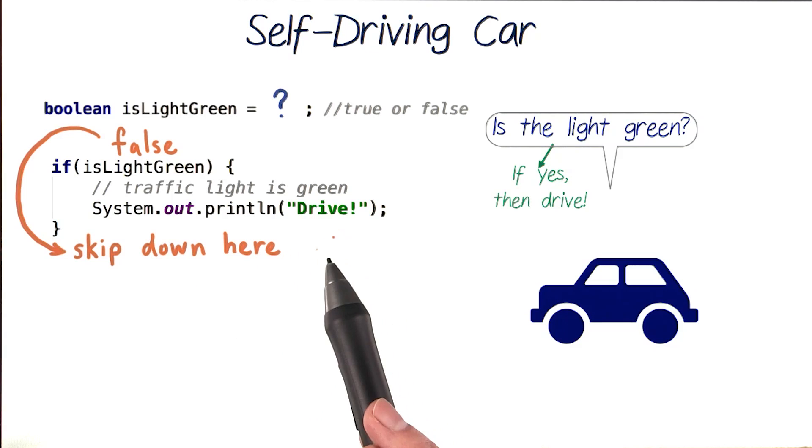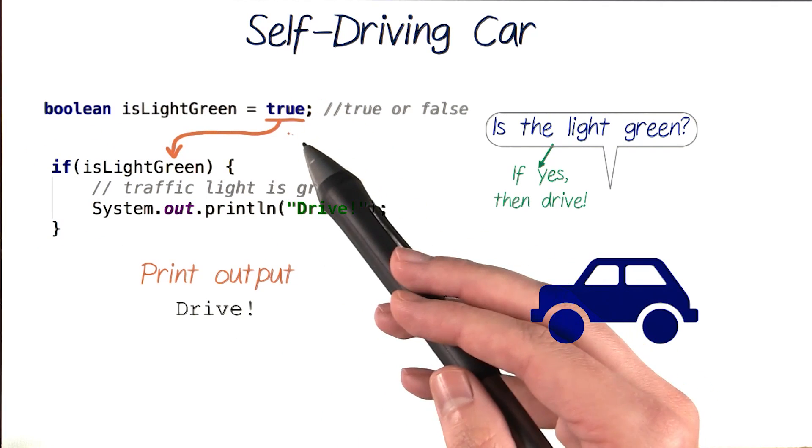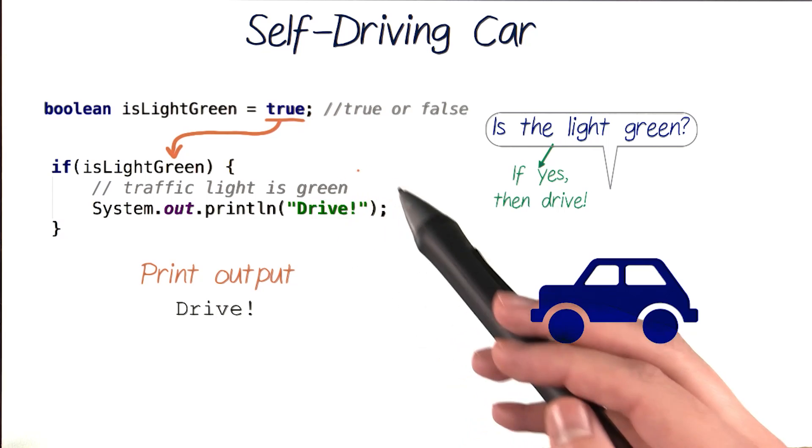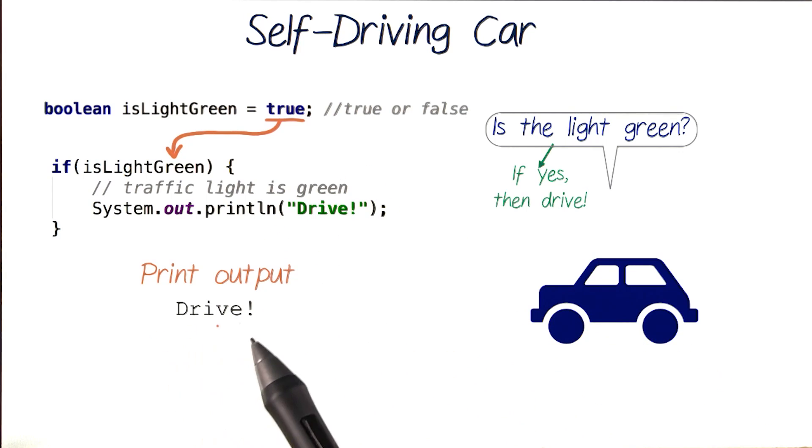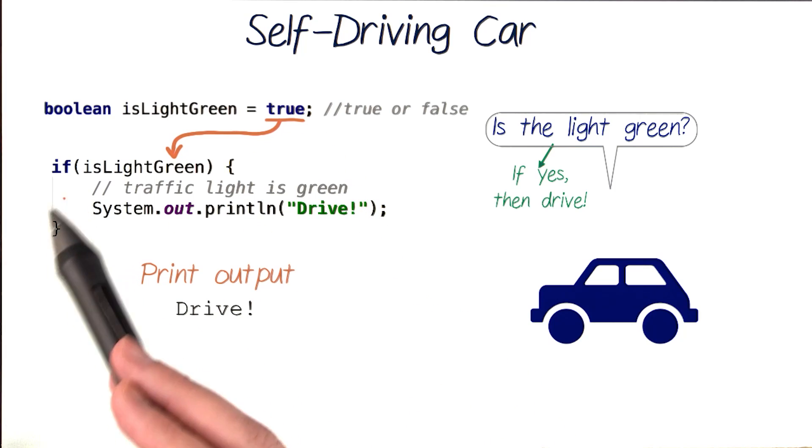So this is our finished if statement. If isLightGreen is true and we run this code, we'll enter our if statement block and the print output will be drive. If our test condition isLightGreen was false, we wouldn't print anything.